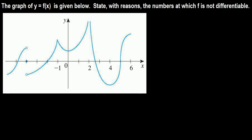So let's look at the numbers starting from the left. It's continuous everywhere here. There's the point negative 1, negative 2, negative 3, negative 4. So at x equals negative 4, the limit does not exist — from the right side it's going one way, from the left side it's going the other way. The limit does not exist, so it's not continuous.